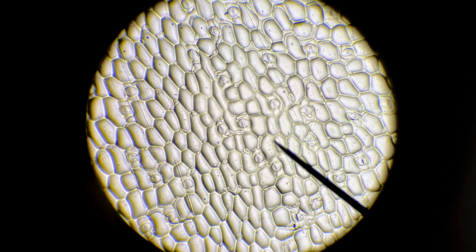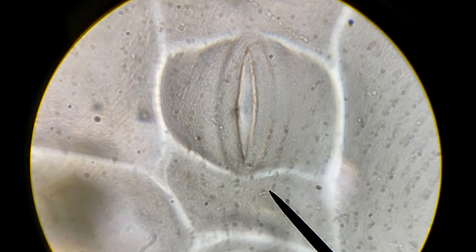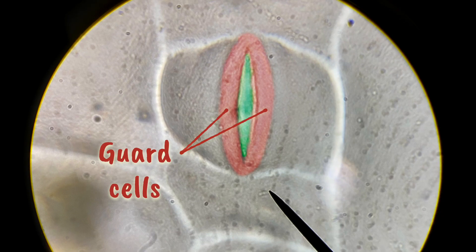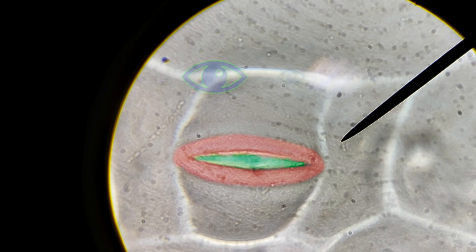You see that? Brilliant. If we look close up, we can see guard cells either side of a stomatal pore. The word stomata comes from the Greek word for mouth, and it's pretty obvious why.